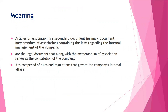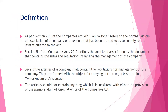Let's understand the meaning of Articles of Association. As mentioned in an earlier session, the Memorandum of Association is the primary document. The Articles of Association contain the laws regarding the internal management of the company. It is a legal document that, along with the Memorandum of Association, serves as the constitution of the company. It comprises rules and regulations that govern the company's internal management.